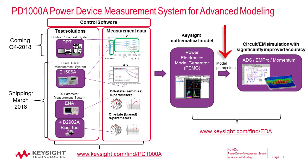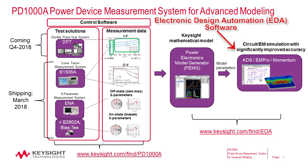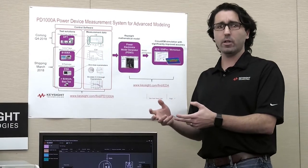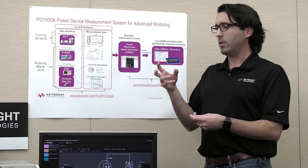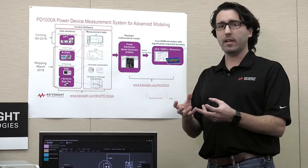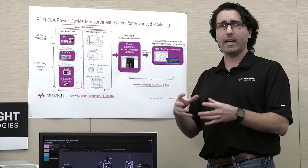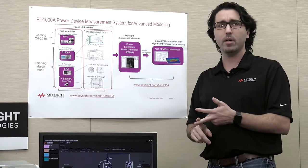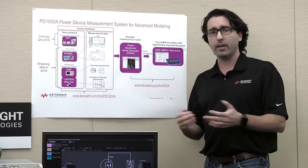It creates the model that you can then use in Keysight's suite of simulation software tools such as ADS, EM Pro, and Momentum. You can simulate the circuit design, the electromagnetic effects, and a whole slew of other things. The goal is that with this very accurate model, you create very accurate circuit simulations. When you actually create your first real prototype, you are much more likely to have the simulated performance match the actual real-world performance of your device — eliminating design cycles, saving you time and money, and reducing the potential of having failed devices.